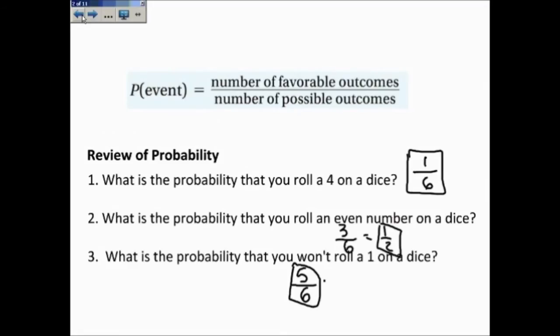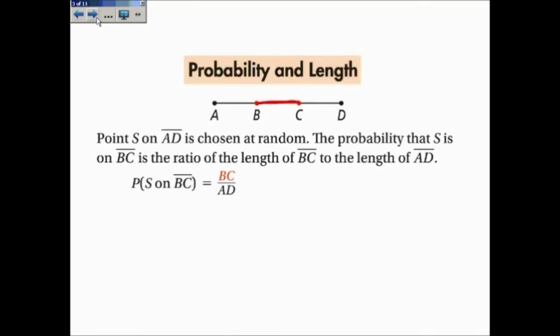Again, this reminds me of favorable out of possible. BC is our favorable, and AD is the possible. So it's the length of BC out of the length of AD.